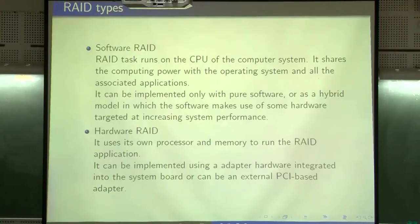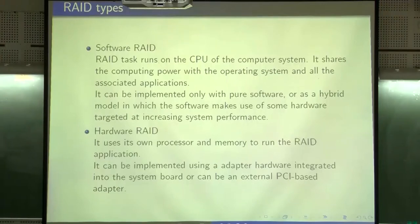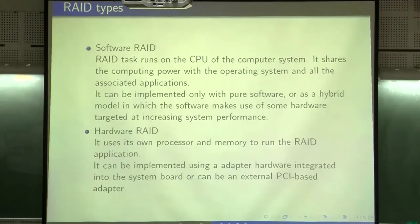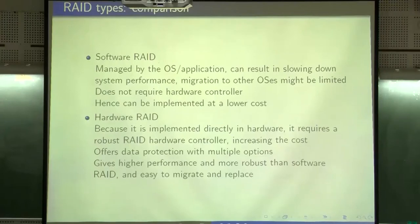There are two main types: software RAID and hardware RAID. In software RAID, the RAID task runs on the CPU of a computer system and shares computing power with the operating system and applications. It can be implemented in pure software or as a hybrid model where software makes use of some hardware to increase performance. Hardware RAID uses its own processor and memory to run the RAID application, implemented using an adapter hardware integrated into the system board or an external PCI-based adapter.